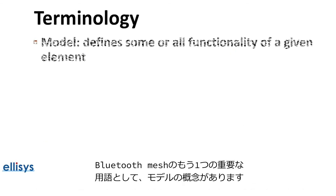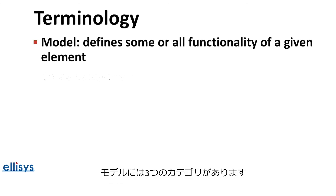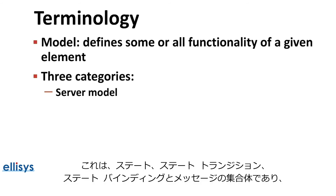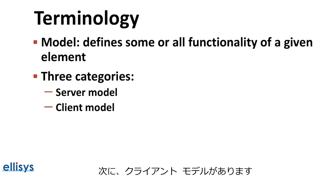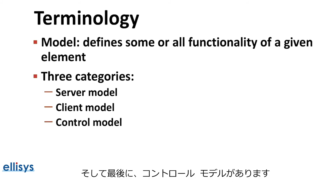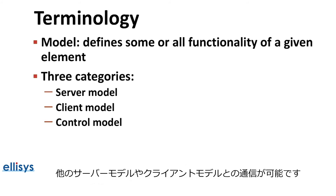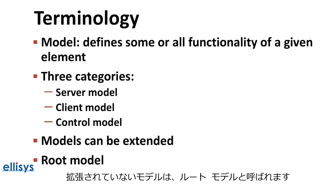Another important term in Bluetooth Mesh is the concept of a model. A model defines some or all of the functionality of a given element. There are three categories: the server model, which is a collection of states, state transitions, state bindings, and messages which an element may send or receive; the client model, which does not define any states but focuses on get, set, and status messages sent to a server model; and the control model, which contains both a server and a client model allowing communication with other server and client models. Models can be extended to include additional functionality instead of modifying the original model, and a model that is not extended is called a root model.